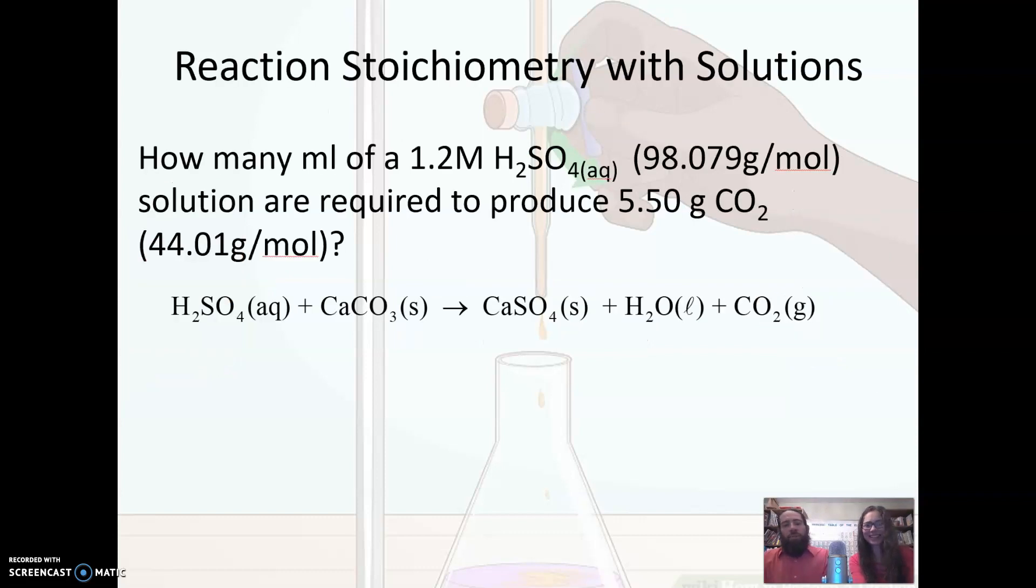When we do reaction stoichiometry with solutions, it's really not a whole lot different than what we've done before. Remember, stoichiometry requires a balanced equation, and what stoichiometry means is if we have information about one thing, we can predict information about something else in that balanced equation.